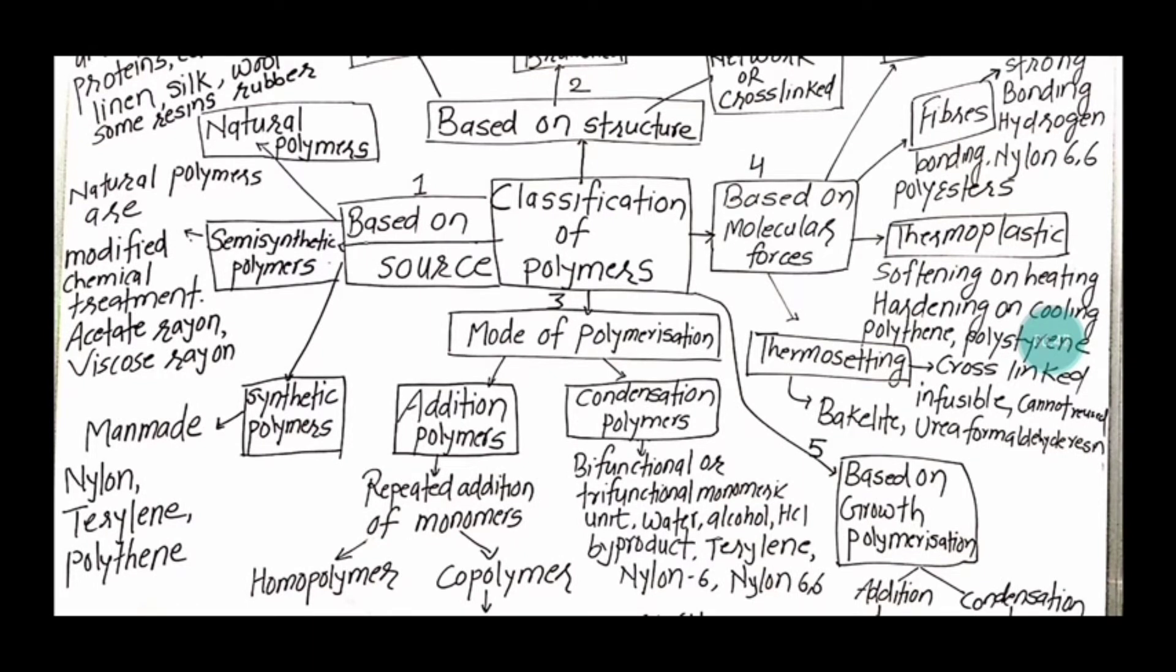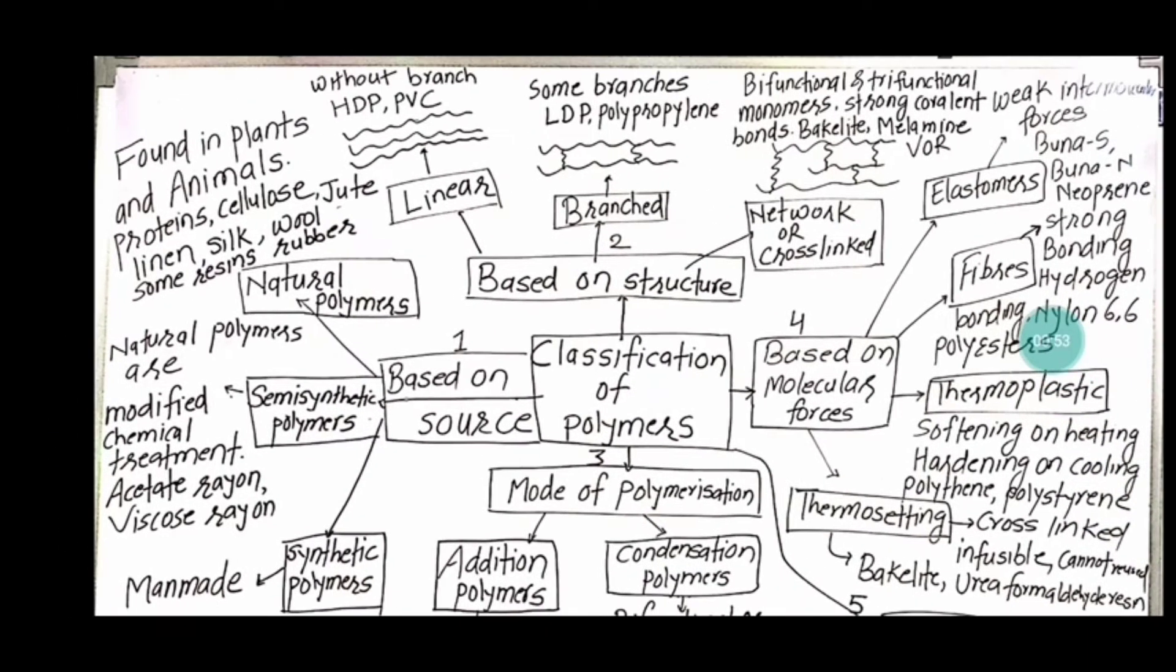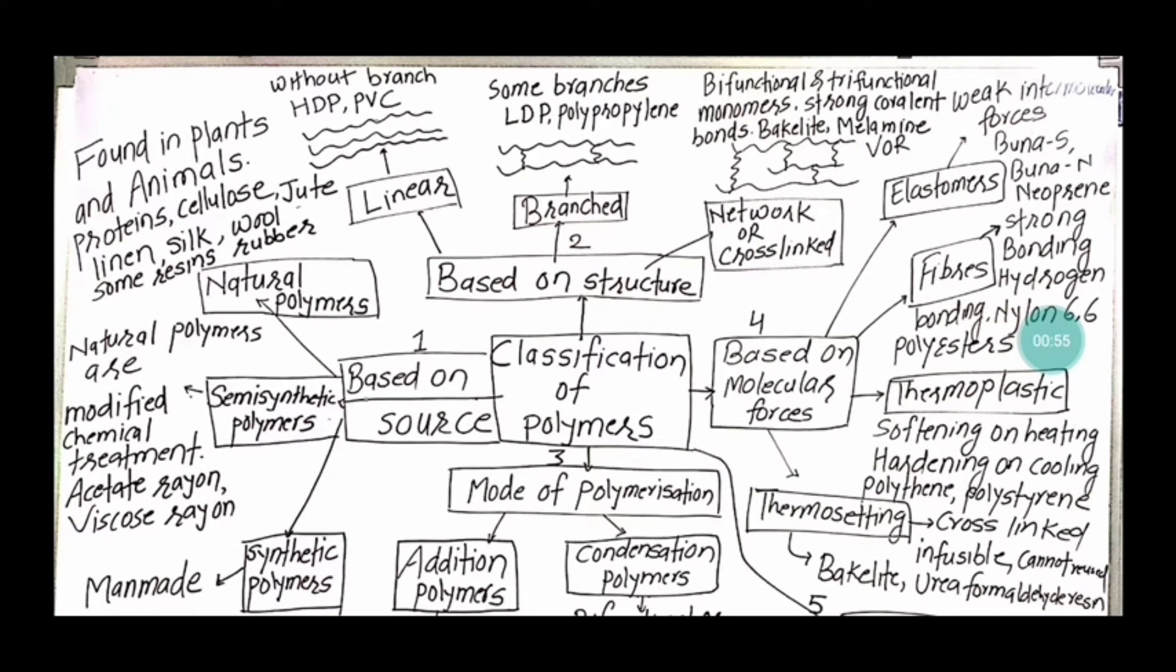Examples we have nylon, terylene, and polythene. They are made in laboratory. Then classification based on its structure. First we have linear, having without branch, for example high-density polythene and polyvinyl chloride.